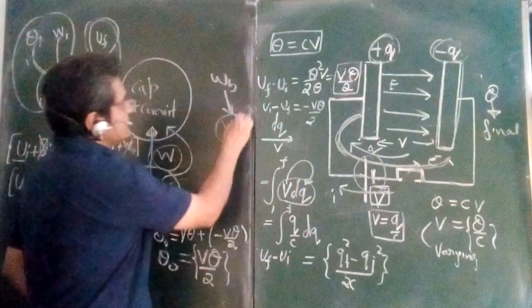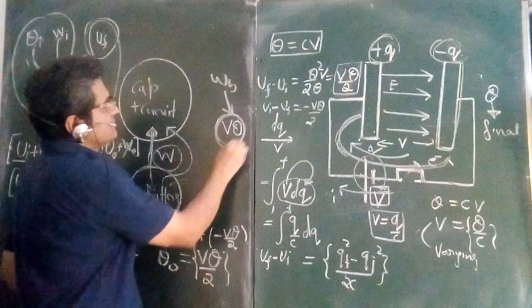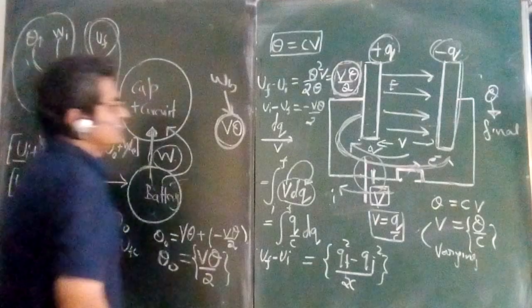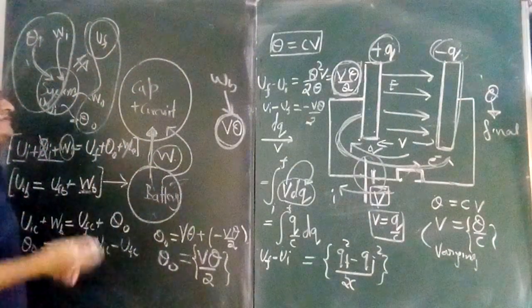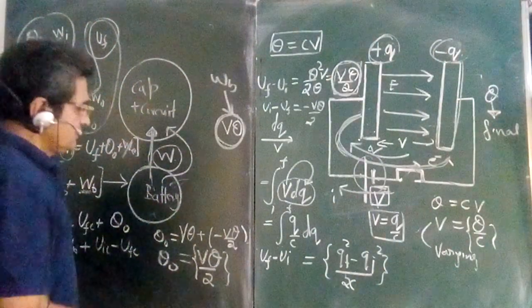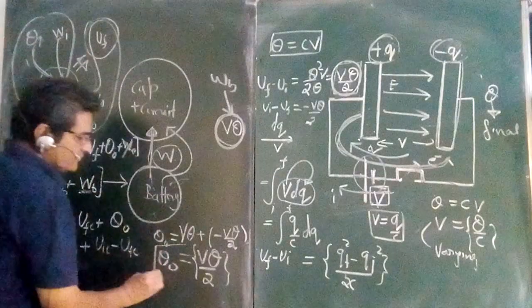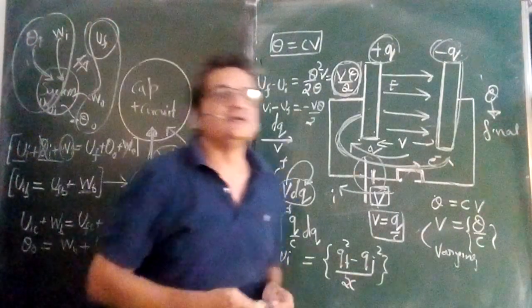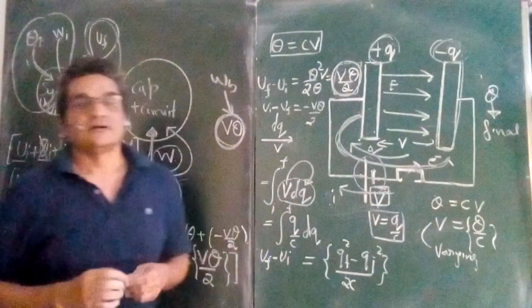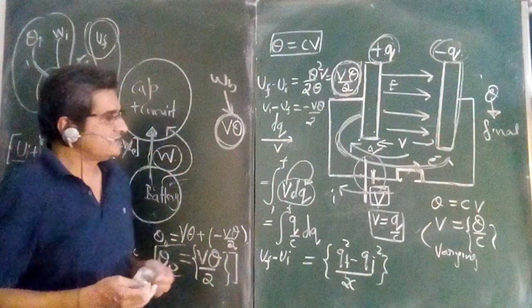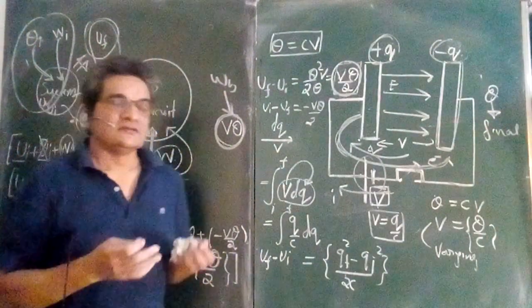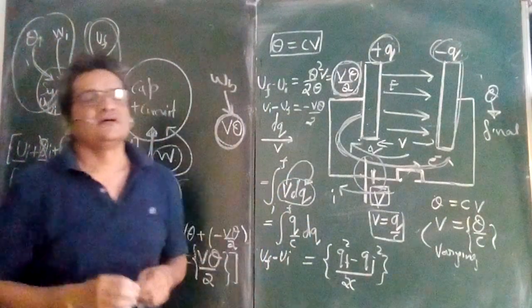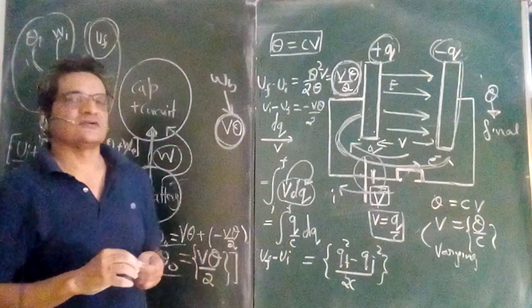So the heat lost is VQ upon 2. This resolves the discrepancy: the battery supplies energy VQ, but only VQ upon 2 is stored in the capacitor. The other half, VQ upon 2, is lost as heat in the resistance of the circuit. So half of the energy is always lost as heat whenever we charge a capacitor — a significant energy loss.